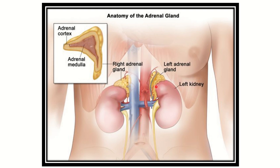The left adrenal gland and the right adrenal gland are both related to the abdominal aorta. The right adrenal gland is also related to the inferior vena cava. The hilum of the kidney lies more inferiorly, and structures passing through the hilum — such as the renal vein, renal artery, and pelvis or ureter — are not directly related to the right adrenal gland.